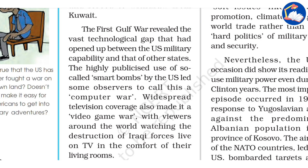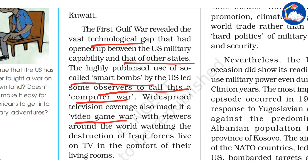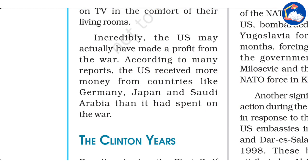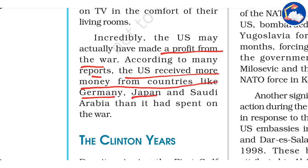The UN operation, called Operation Desert Storm, was overwhelmingly American — nearly 75 percent of the coalition forces were from the US. Although Iraqi President Saddam Hussein had promised 'the mother of all battles,' the Iraqi forces were quickly defeated and forced to withdraw from Kuwait. The First Gulf War revealed the vast technological gap between US military capability and that of other states. The highly publicized use of so-called smart bombs led some observers to call this a 'computer war.' Incredibly, the US may actually have made a profit, receiving more money from countries like Germany, Japan, and Saudi Arabia than it had spent on the war.